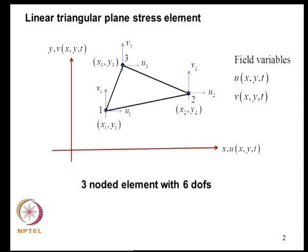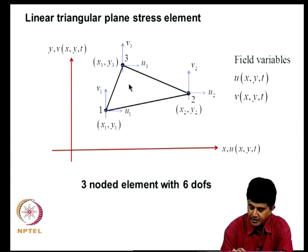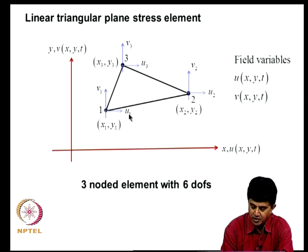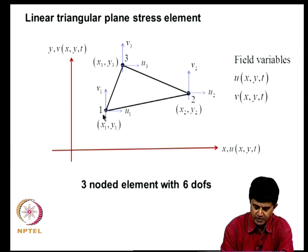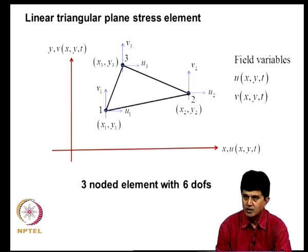We have been discussing analysis of 2-dimensional continuum and will continue with that. In the previous lecture we considered a triangular element with 3 nodes, and at each node there are 2 degrees of freedom, making it a 3-noded element with 6 degrees of freedom. The field variables U and V are functions of X, Y, and T, interpolated in terms of nodal values U1, U2, U3 and V1, V2, V3 using linear interpolation functions with the Kronecker delta property.